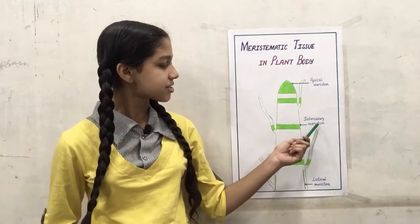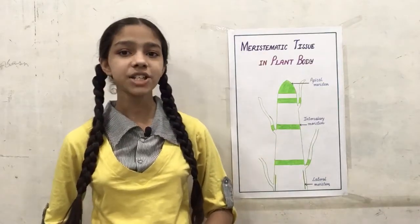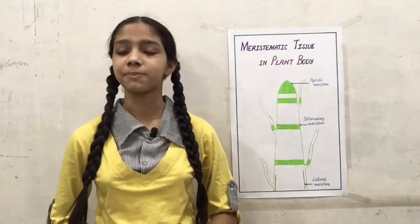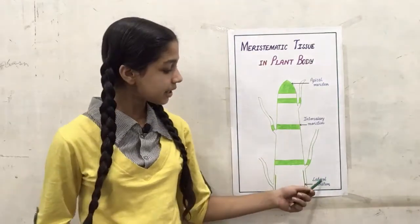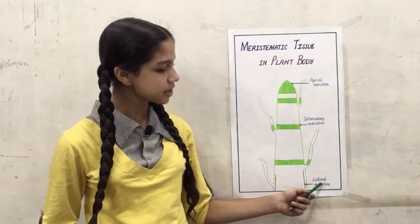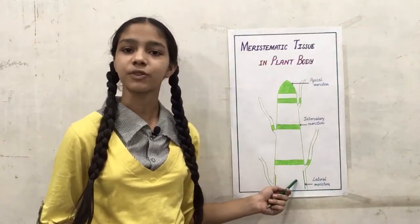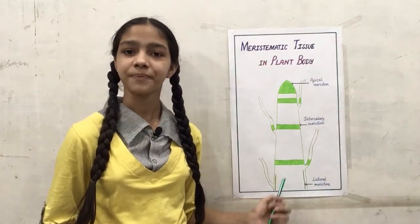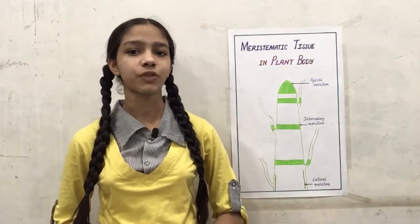Intercalary meristem is present at the internodes in the plant body. Lateral meristem is present at the base of the plant body and it helps in increasing the girth of the plant.